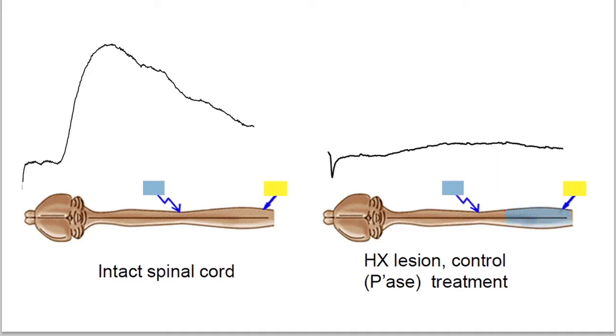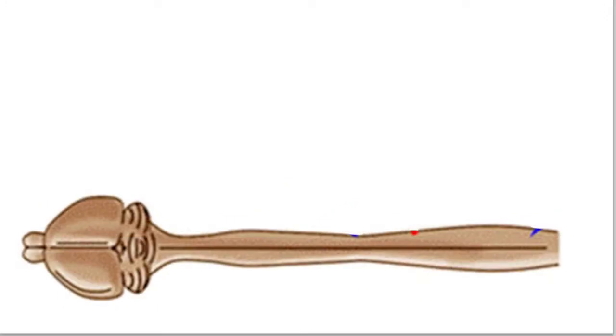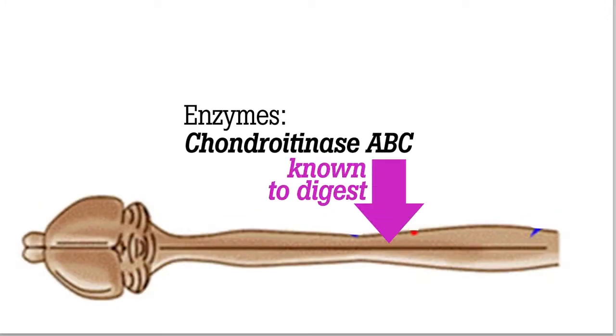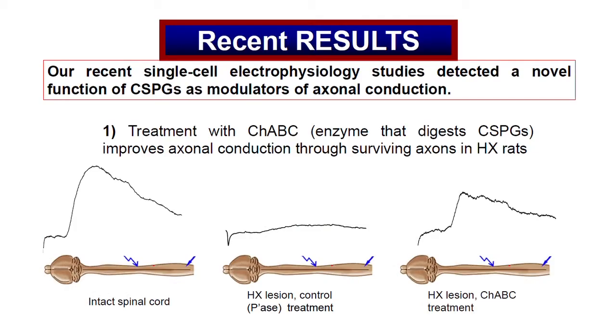We used an enzyme called chondroitinase ABC, which is known to digest CSPGs, to see if digestion of CSPGs could recover transmission. We found that transmission could be partially recovered. This means that CSPGs are really involved in the block of conduction after chronic partial spinal cord injury.